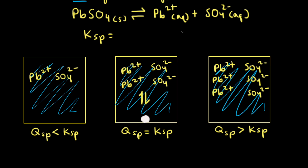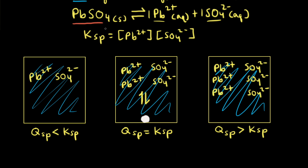Ksp is equal to the concentration of lead two plus raised to the first power, because we have a coefficient of one in the balanced equation, times the concentration of sulfate also raised to the first power. Pure solids are left out of equilibrium constant expressions, therefore we're not going to include lead sulfate. For lead two sulfate, Ksp is equal to 6.3 times 10 to the negative seventh at 25 degrees Celsius.